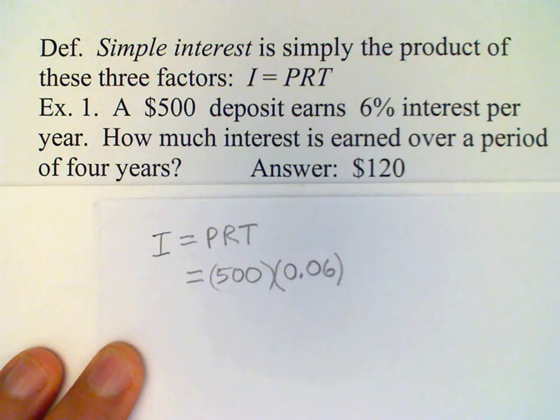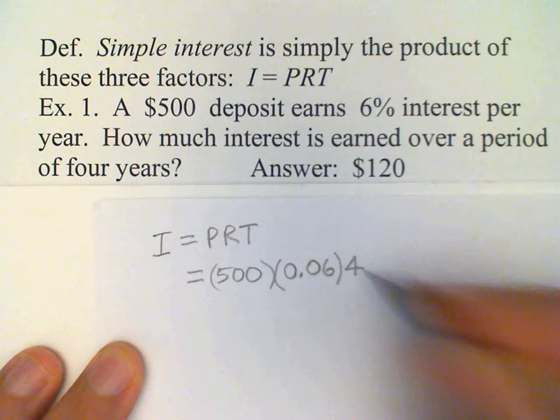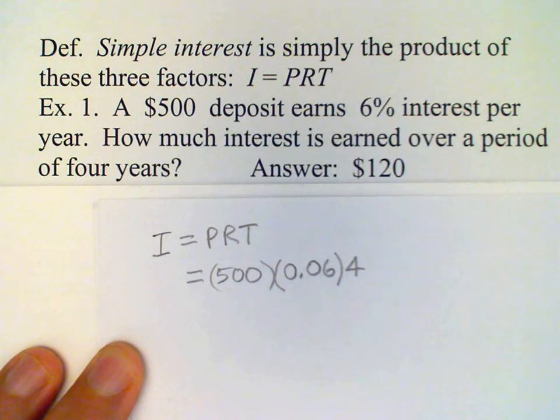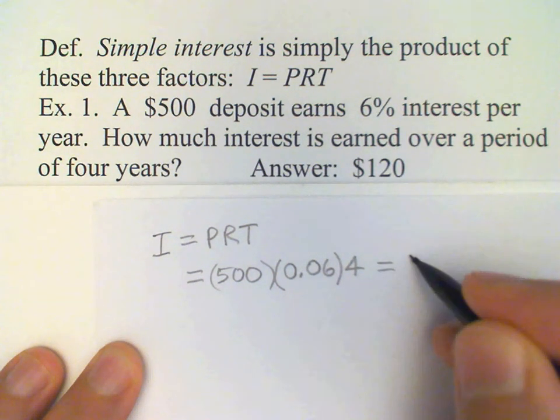And then we multiply by the time, which is four years. When we do the multiplication, the answer does come out to be $120.